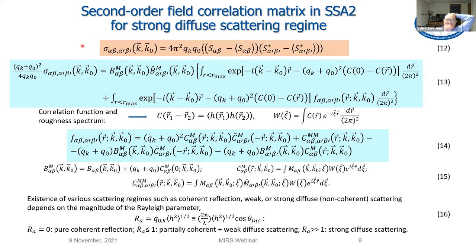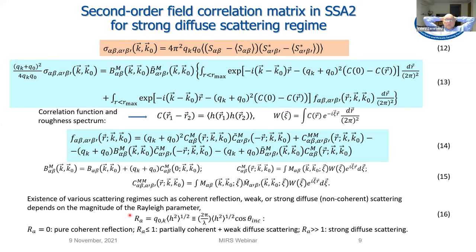The terms with average values of scattering amplitudes can be omitted for the case of strong diffuse scattering, meaning a large value of the Rayleigh parameter, where coherent terms tend to zero. Various scattering regimes — coherent reflection, weak or strong diffuse non-coherent scattering — depend on the magnitude of the Rayleigh parameter (Equation 16). When the Rayleigh parameter equals zero, it means pure coherent reflection; less than or around one means partially coherent mixed with weak diffuse scattering; much larger than one means strong diffuse scattering. Assuming the strong diffuse scattering regime, we arrive at Equation 13.